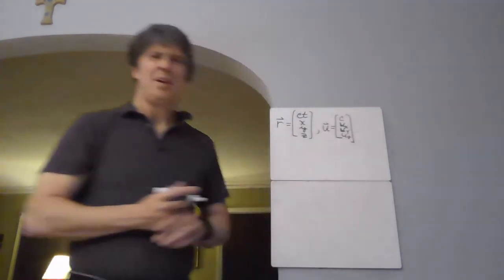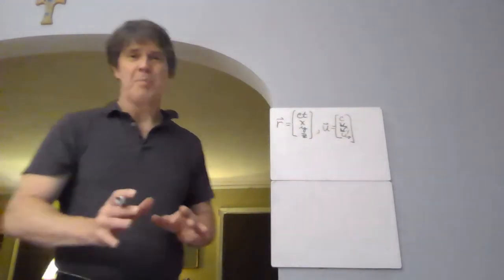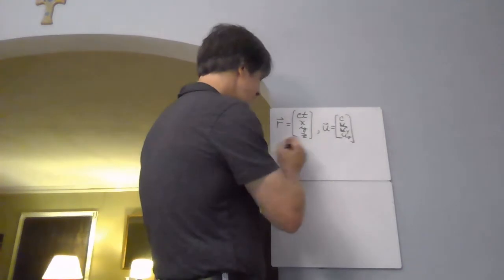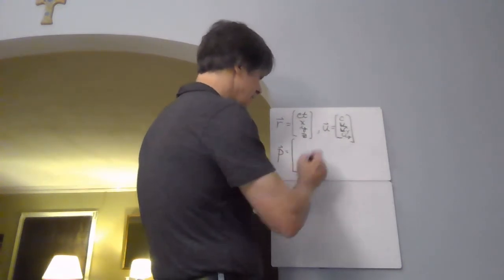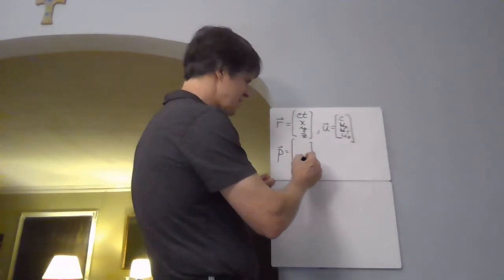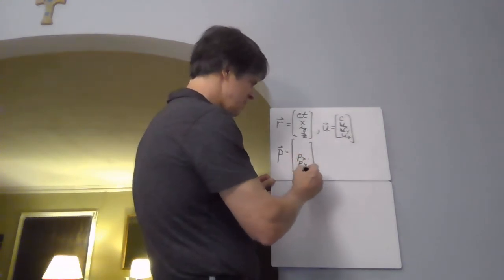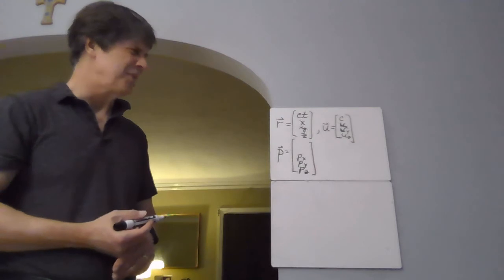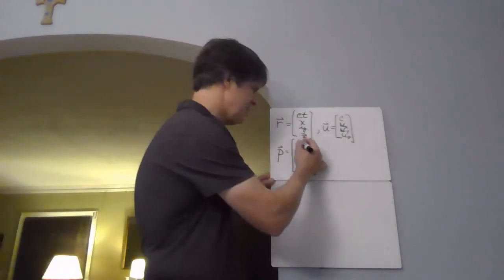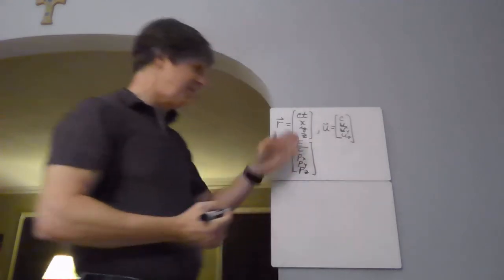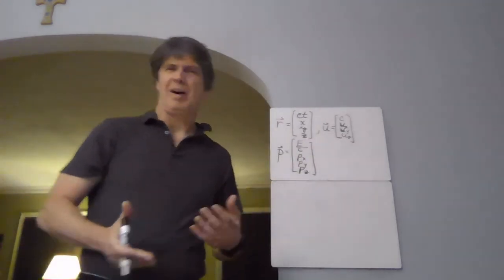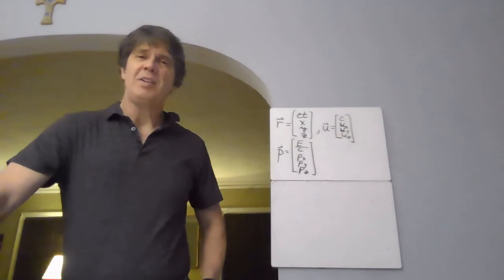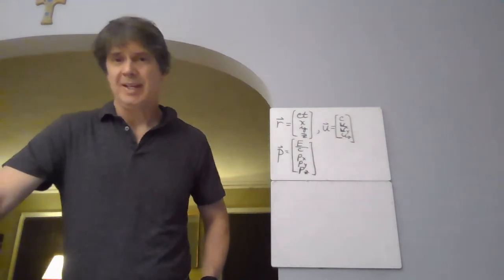Then there's the four-momentum. The four-momentum is a column vector with components Px, Py, and Pz — and for the time-like component, E over C. Some people multiply through by C and use energy units. But look at that — it turns out energy and momentum, which you've heard of before, are only parts of a grander scheme. That's kind of neat.